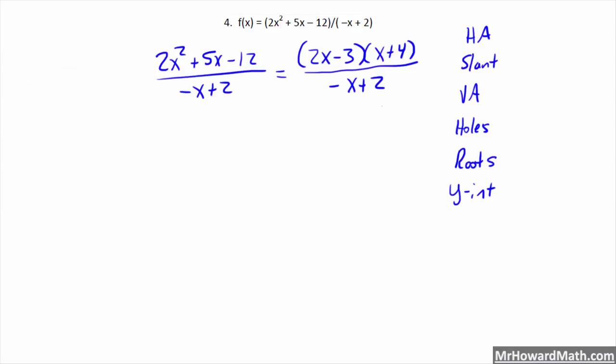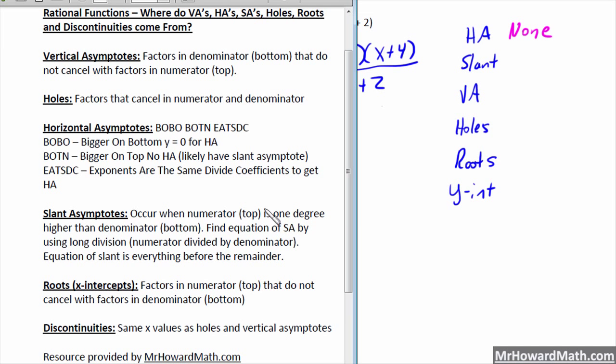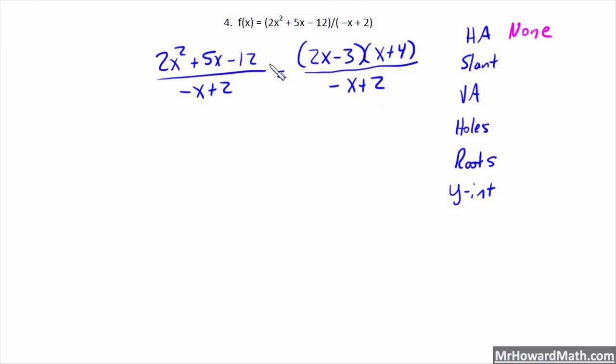We'll write none here for that. But we likely have a slant, and if we look at our list, slants occur when the numerator is one degree higher than the denominator, and that's what we have here. So, we do long division. Everything in front of the remainder with our long division is the equation of the slant. So, it is one degree bigger on top than bottom, so we'll have a slant. So, we'll do our long division here.